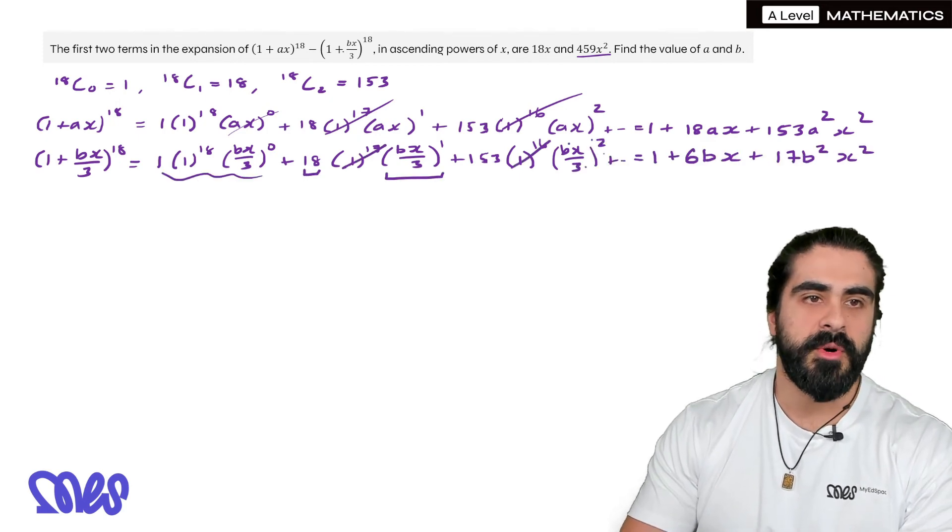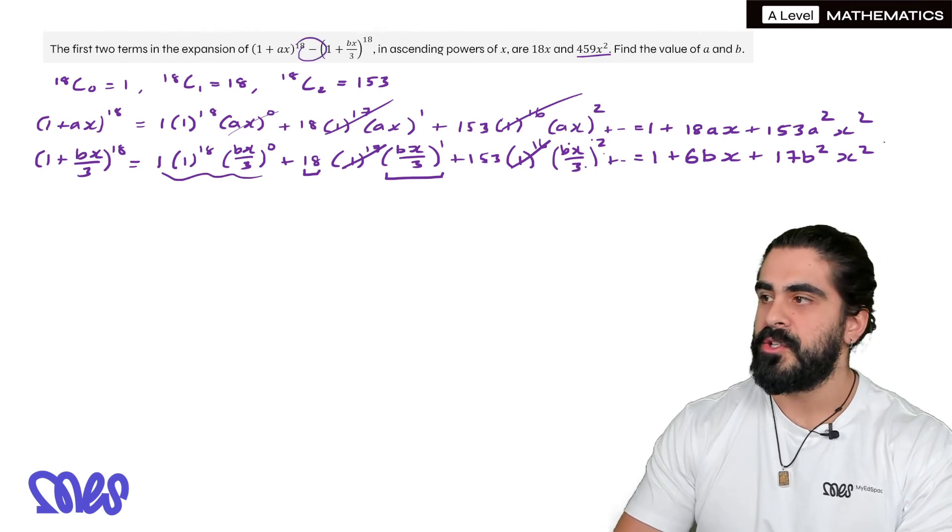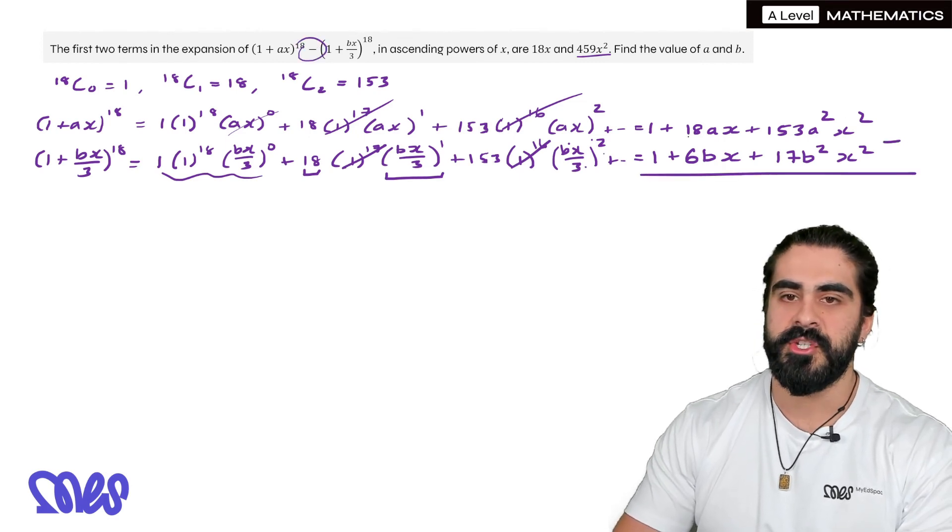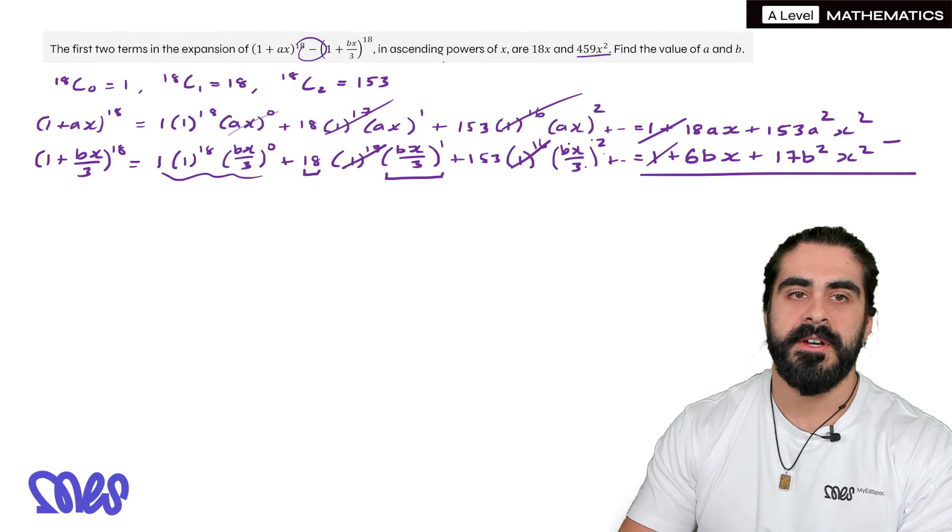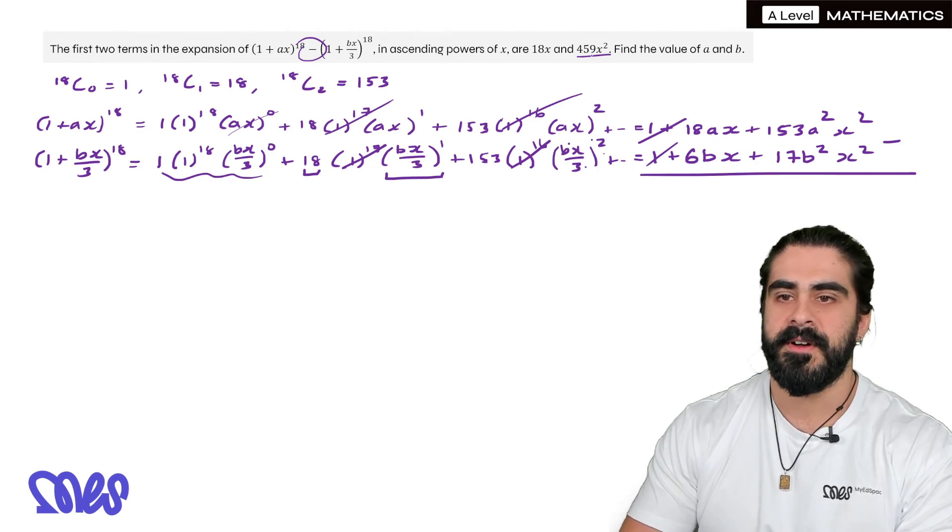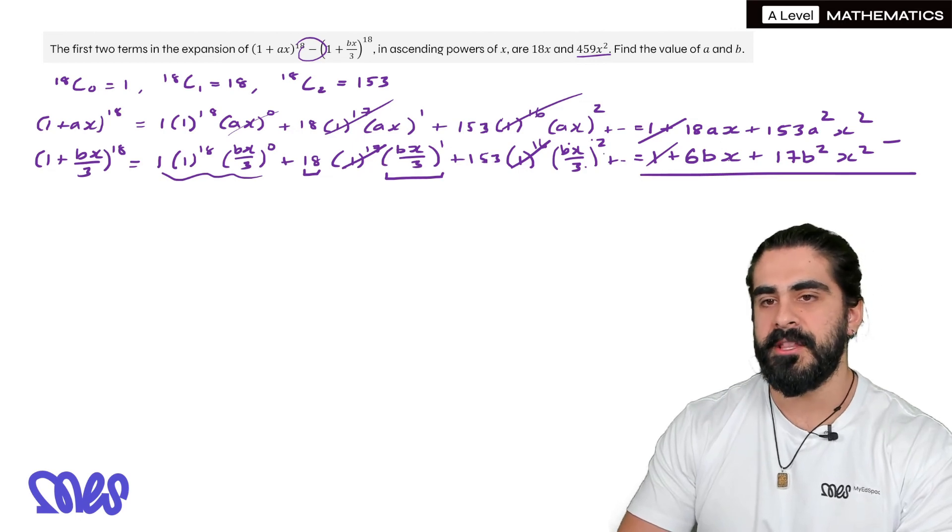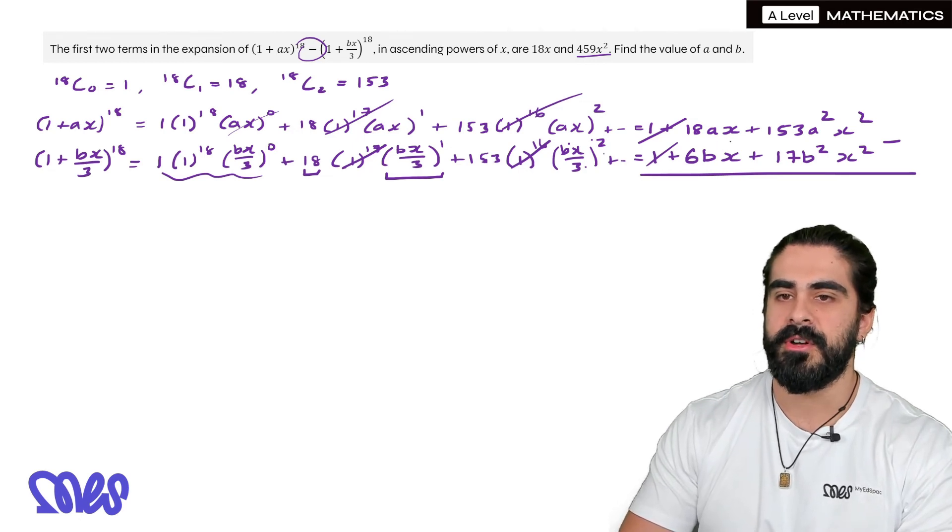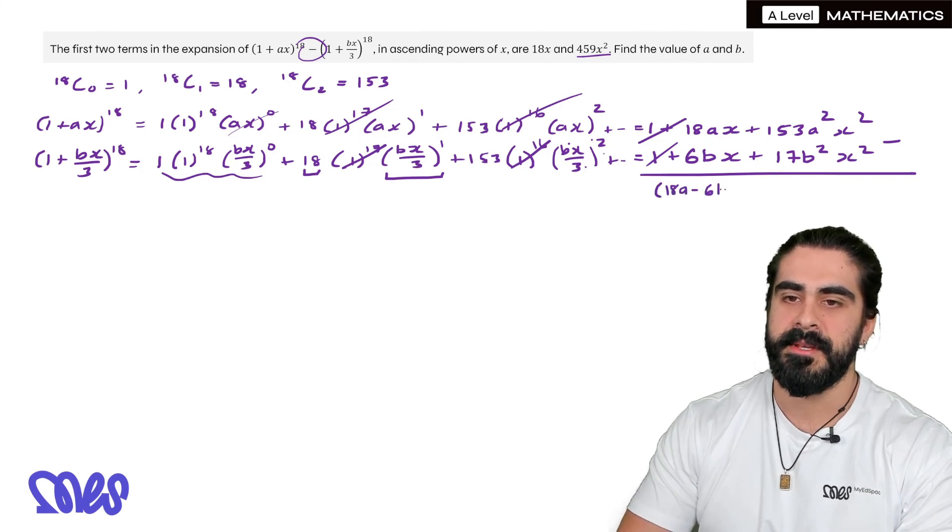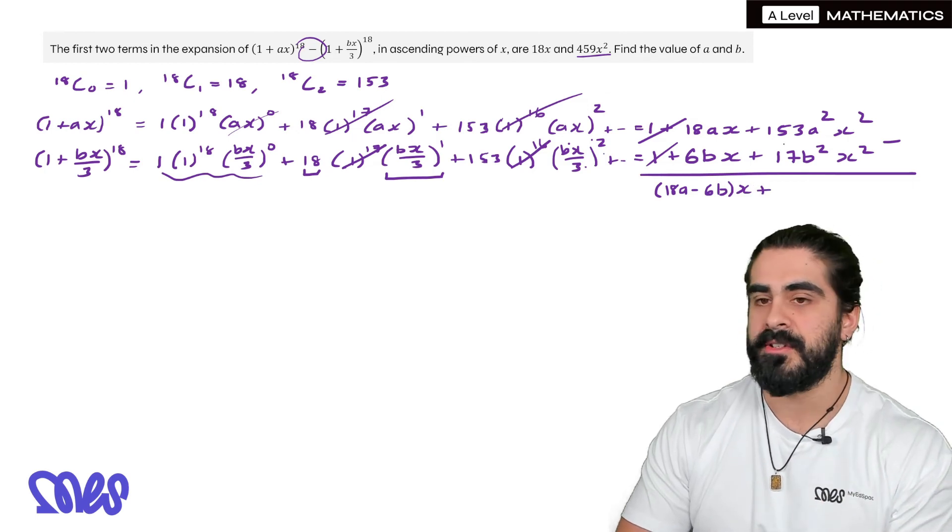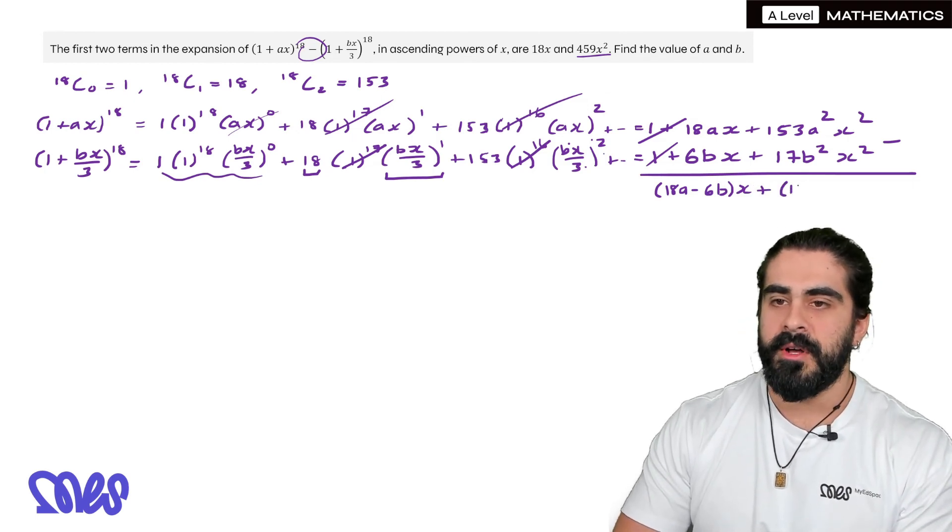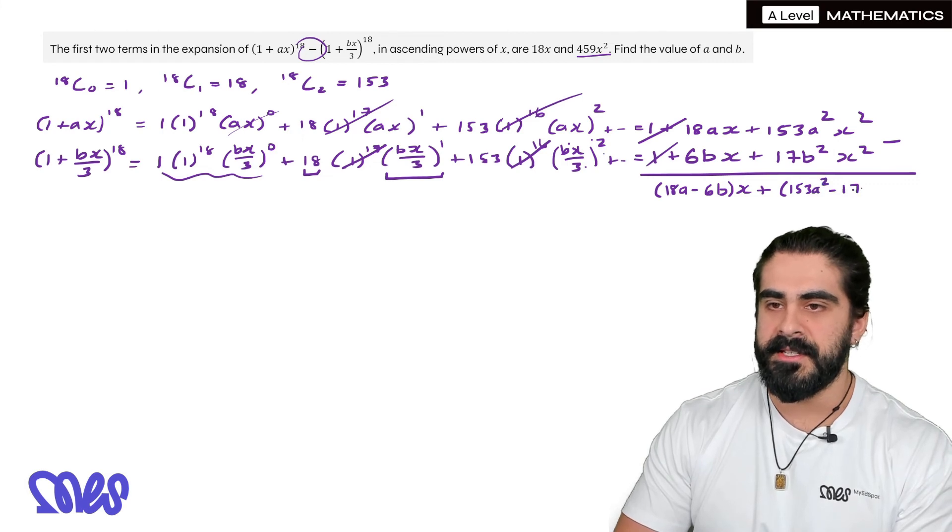What does that simplify to? Now the question says we're taking them away. So when we take them away, the ones cancel, which is why they have said that the first two terms are 18x and 459x^2 because they already knew that the ones would cancel. Now when we take them away, we want to explicitly write down what the coefficient of x would be. The coefficient of x would be 18a - 6b times x. You're basically just factorizing out the x. Then we have 153a^2 - 17b^2 times x^2.